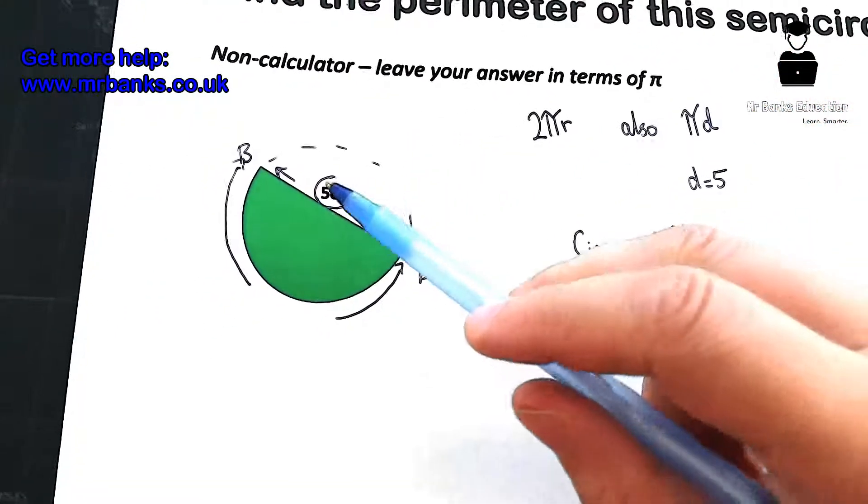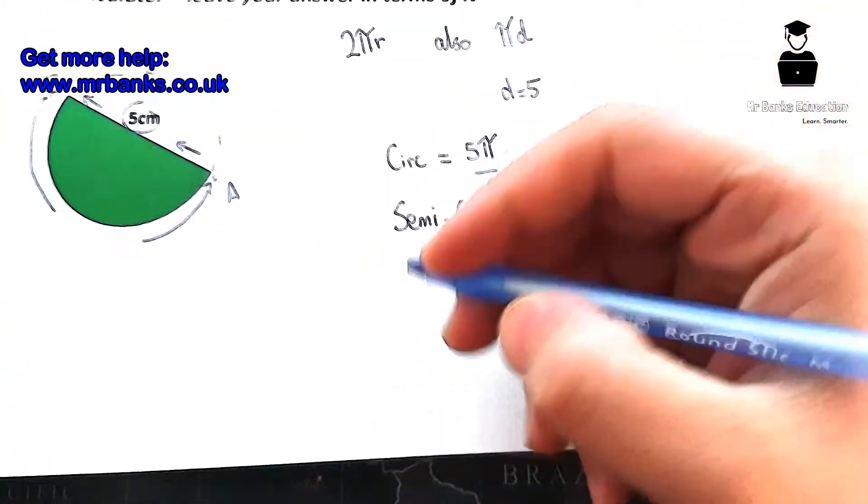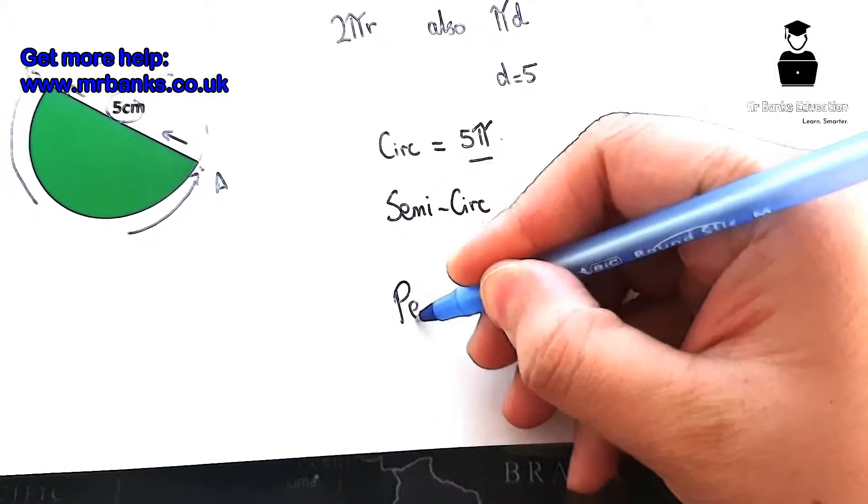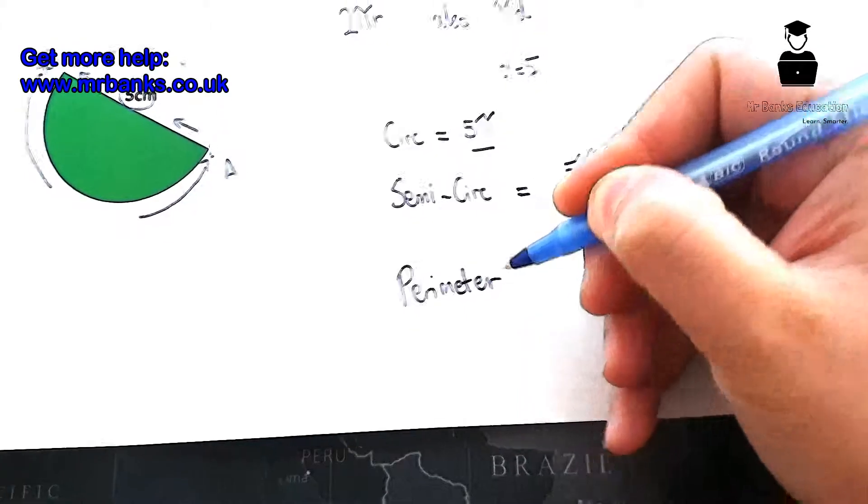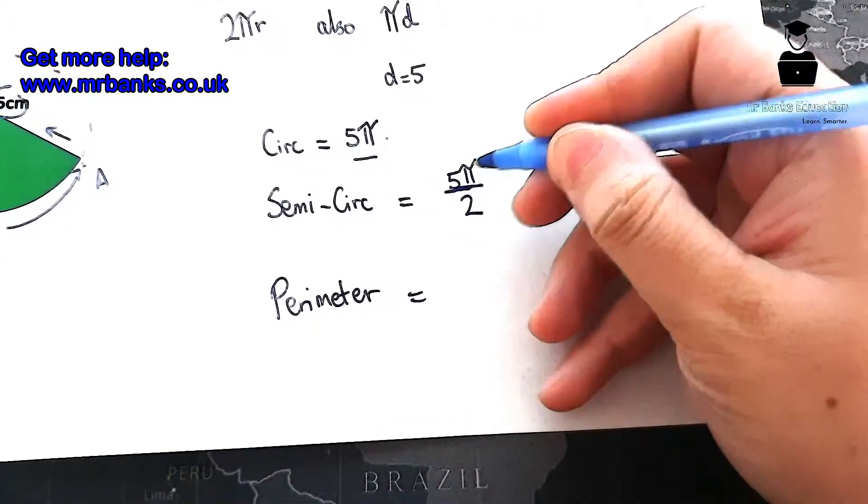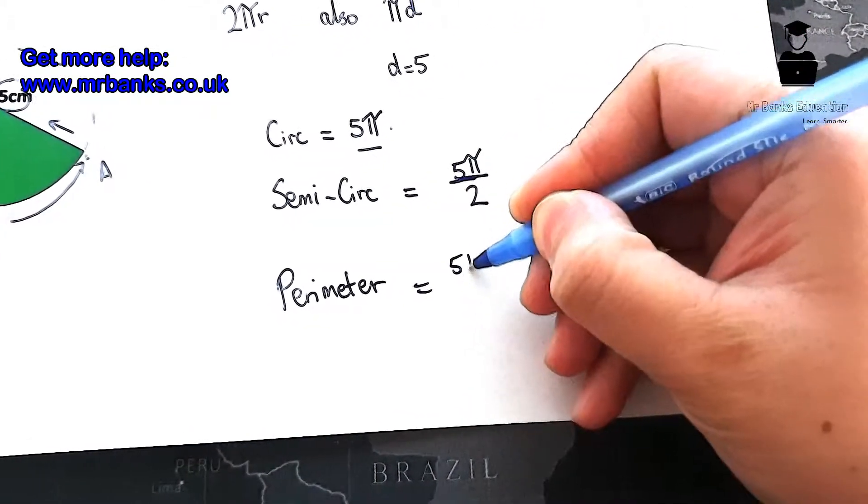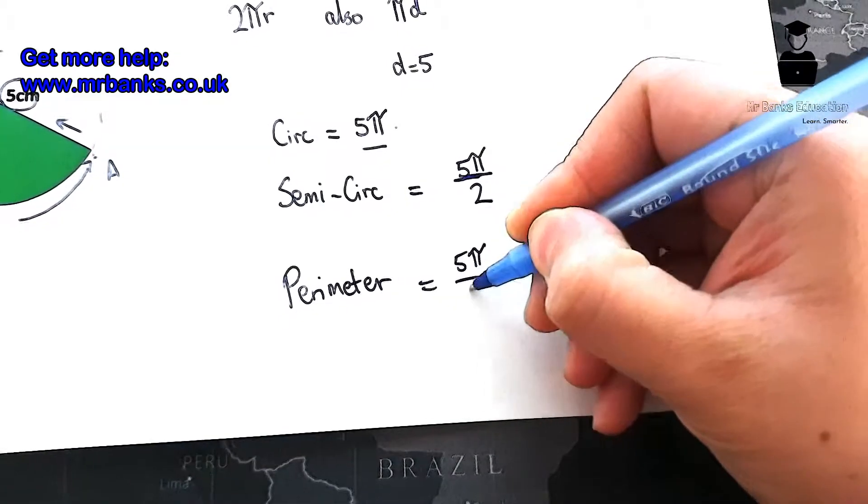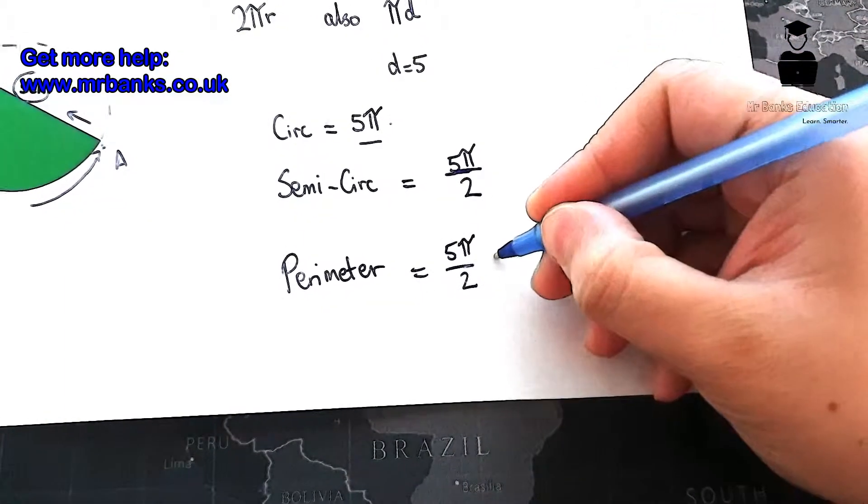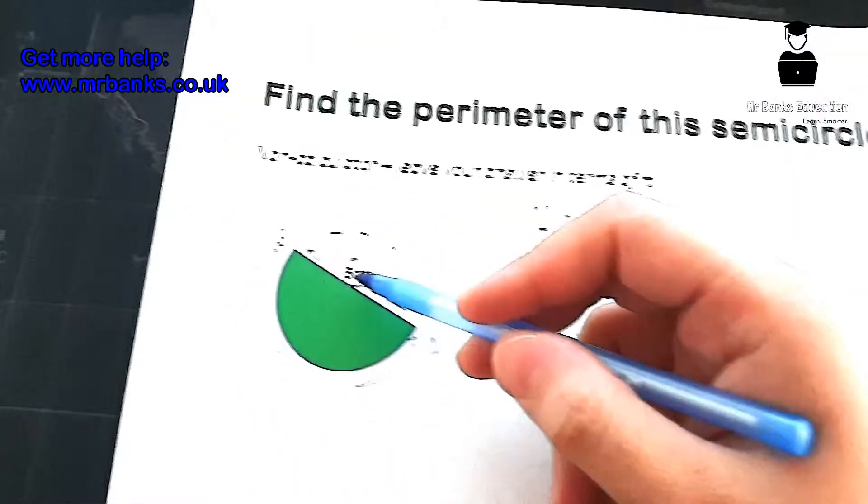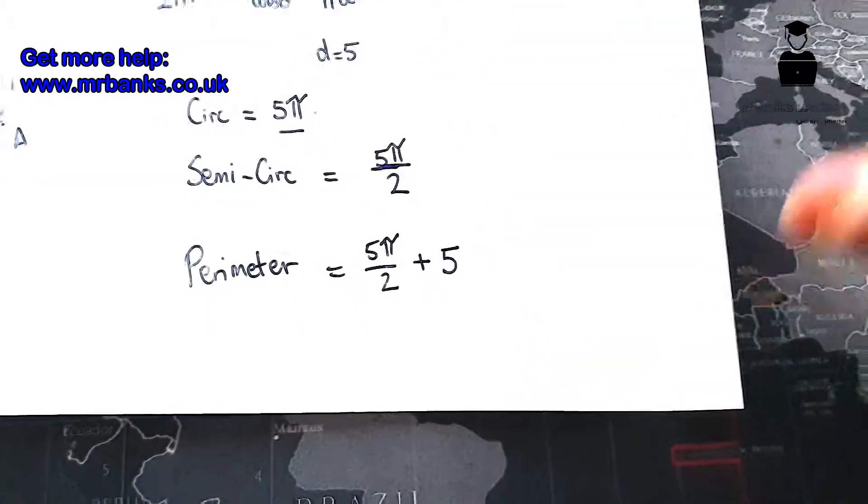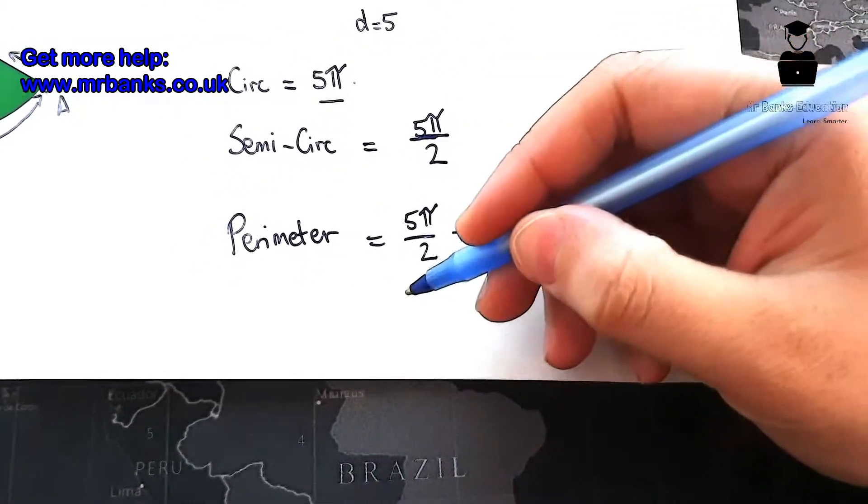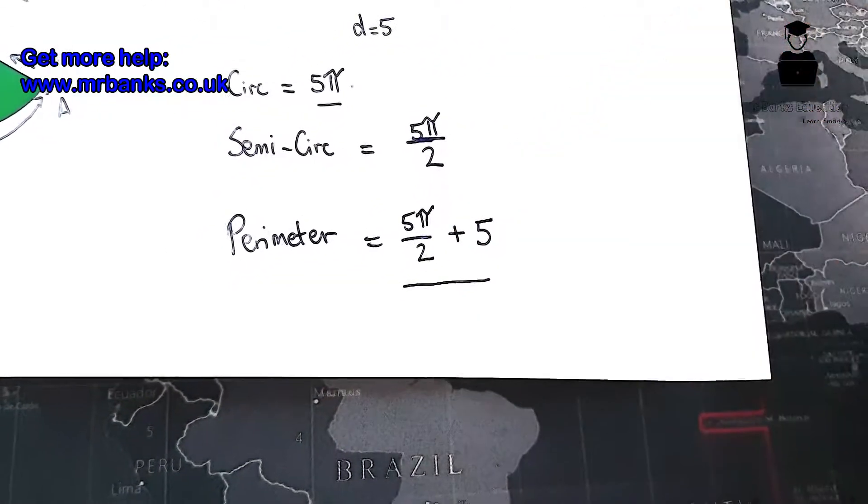However, we also have to add that 5 on. So the perimeter is going to be 5π/2 plus 5.